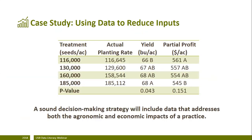If we look at this table, we can see on the left are seeding rates — our target seeding rates. In the next column are the actual planted seeding rates based on the as-planted data. Here is the yield analysis, and what we see here is that the highest yield was achieved with the highest seeding rate.